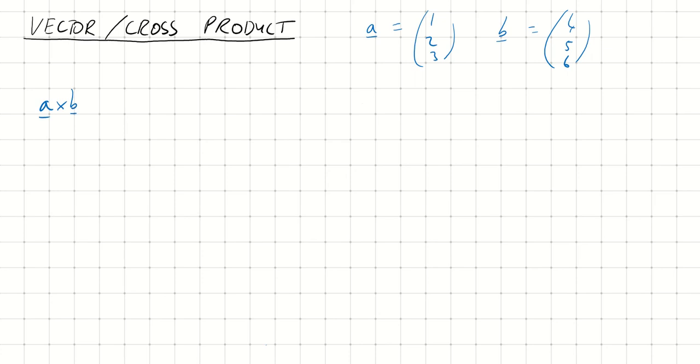If I do A cross B. And A cross B is actually equal to the magnitude of A times the magnitude of B times sine theta times N.